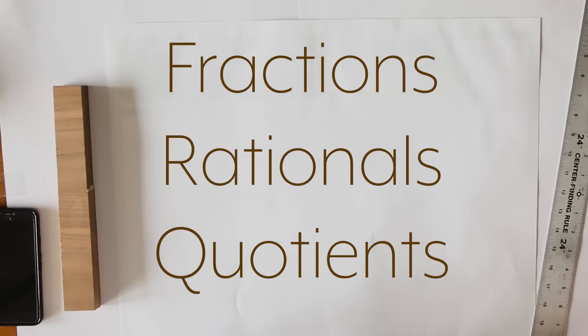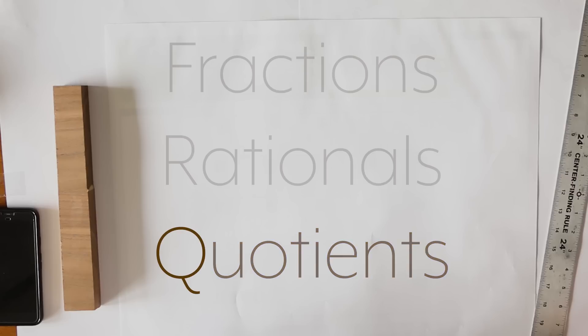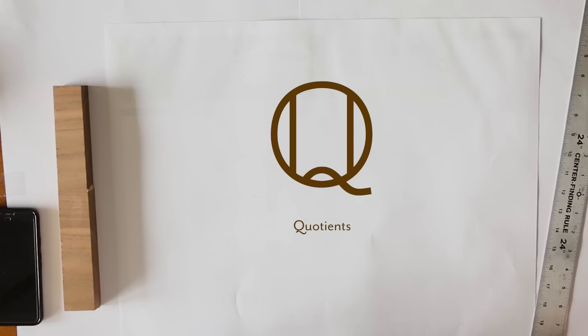This is our next system of numbers. There's a few names we have for them. Fractions, rationals, or quotients. And in fact, the last name is what we'll use to label the set. Q. So, how can we write a set definition for this? Well, it turns out that it's a bit more involved than the previous ones. Here it is.